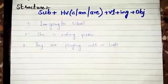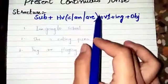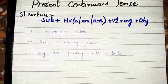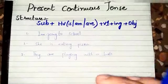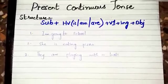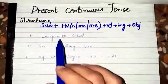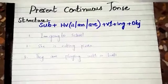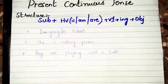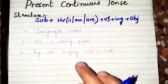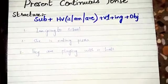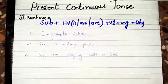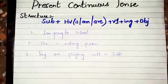You have to remember the structure, then you can make a sentence. For example: I am going to school. She is eating pizza. They are playing with a ball. You have to understand and remember this structure to make sentences.